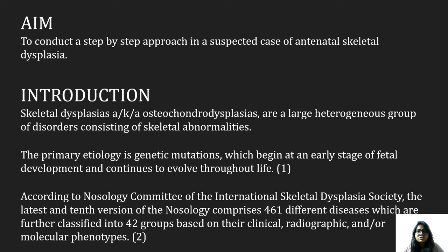Skeletal dysplasia, also known as osteochondrodysplasia, are a large heterogeneous group of disorders consisting of skeletal abnormalities. The primary etiology is genetic mutation, which usually begins at an early stage of fetal development and continues to evolve throughout life. According to the Nosology Committee of International Skeletal Dysplasia Study, the latest 10th version of nosology comprises 461 different diseases, divided into 42 groups based on their clinical, radiological, and molecular phenotype.